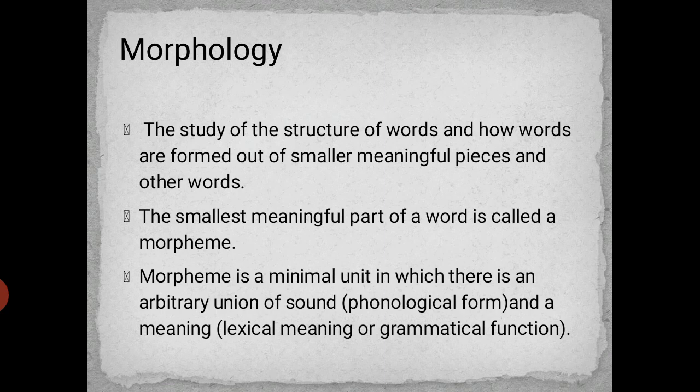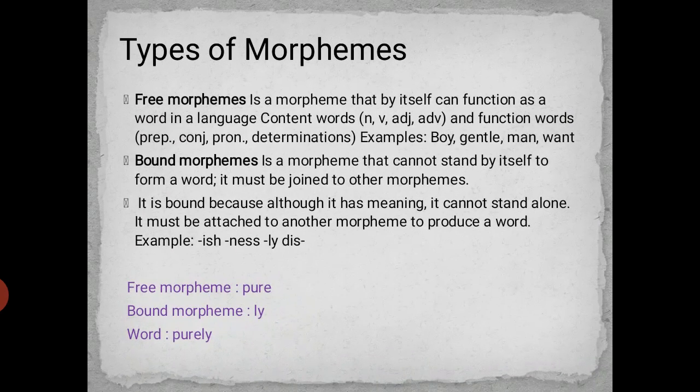There are two types of morphemes. A free morpheme is a morpheme that by itself can function as a word in a language. This includes content words such as nouns, verbs, adjectives, and adverbs, as well as function words like prepositions, conjunctions, pronouns, and determiners. For example: boy, gentleman, want — these are examples of free morphemes, which are content words.